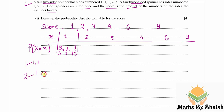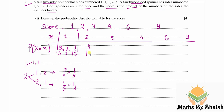For X=2, the product is 2 if the first spinner shows 1 and the second shows 2, or the first shows 2 and the second shows 1. P(1 on first) × P(2 on second) = 3/5 × 1/3 = 3/15. P(2 on first) × P(1 on second) = 1/5 × 1/3 = 1/15. Adding these: P(X=2) = 3/15 + 1/15 = 4/15.